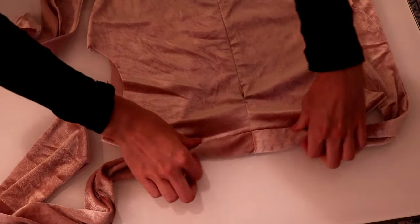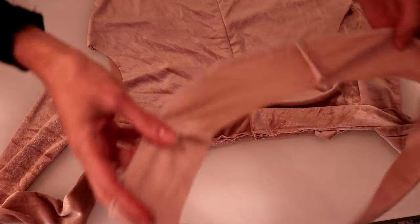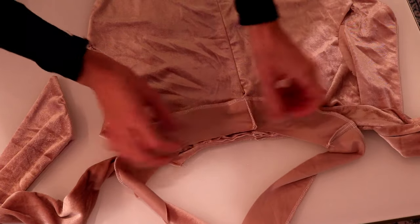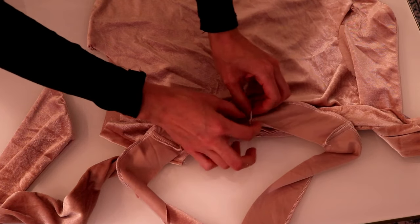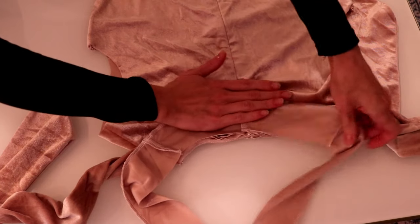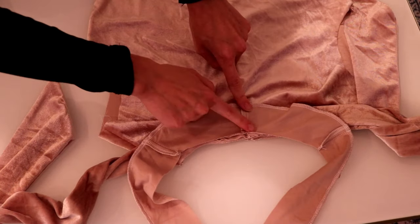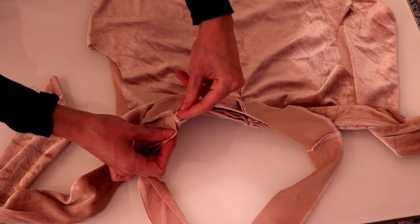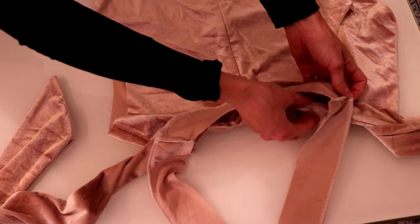Next, fold the necktie down and pin the neckline facing to the necktie and the garment with right sides together. Match the seams of the facing with the seams of the garment. Pin and stitch.